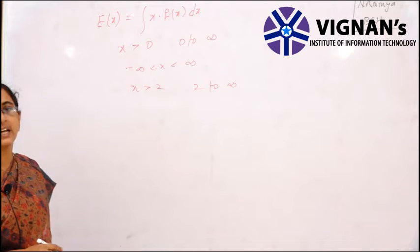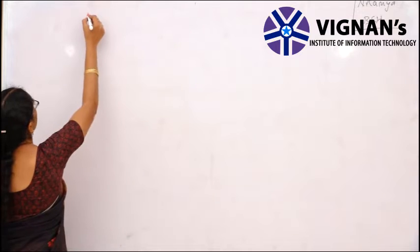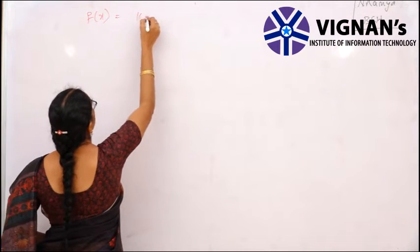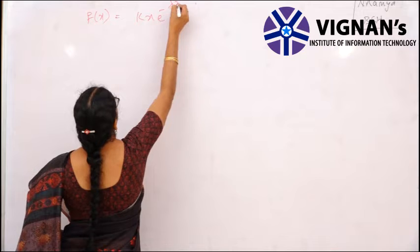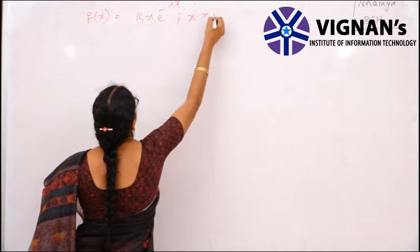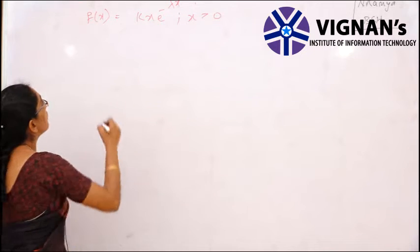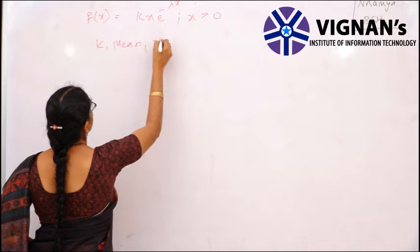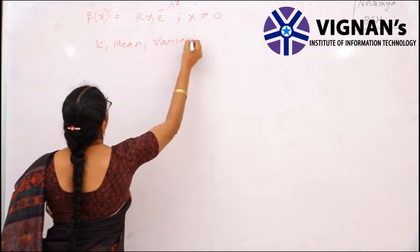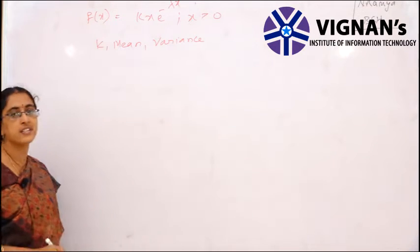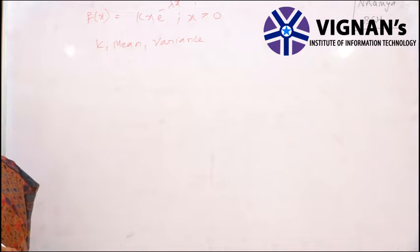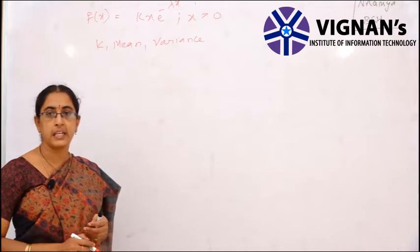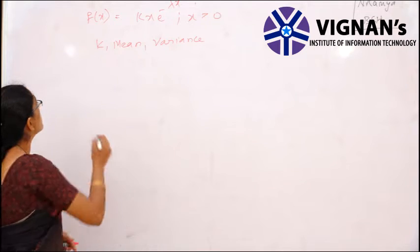Now let us see the problems on continuous random variables. Problem 1: A random variable x has density function f(x) = kx·e^(-λx) for x greater than 0. Find the value of k, the mean, and the variance.